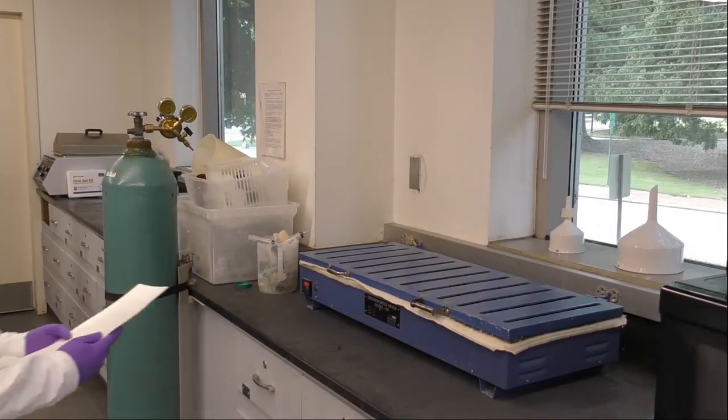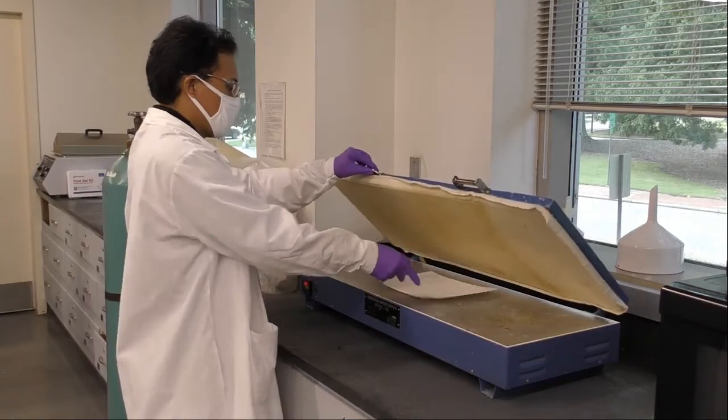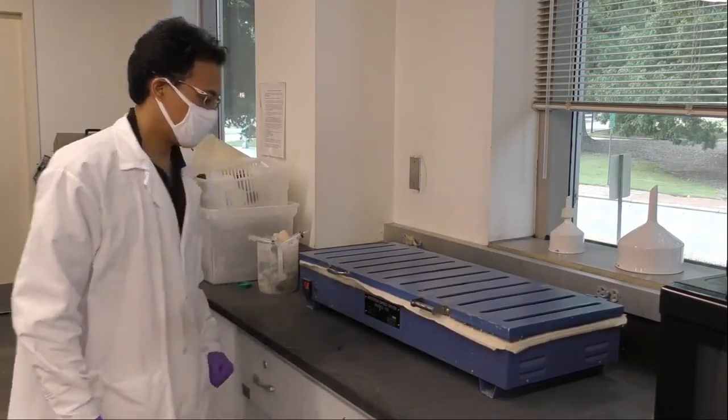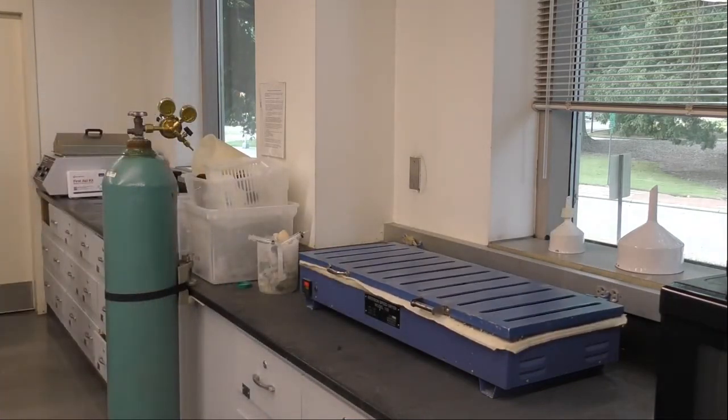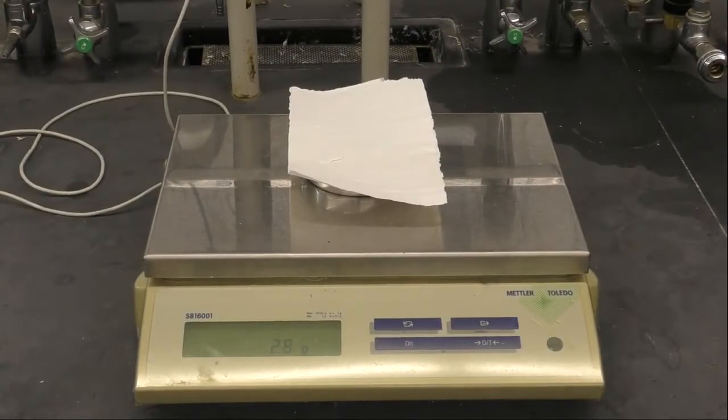Now let's dry our hand sheet paper. Make sure that it is in between two blotter papers and put it into the fast dryer for a few minutes. Now that our hand sheet is dry, it's time to weigh it. Make sure that you are recording this number for the calculations.